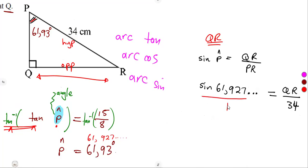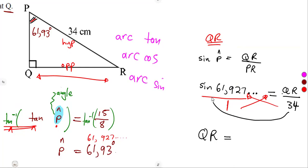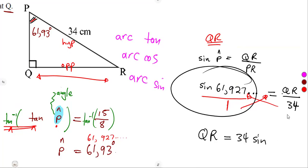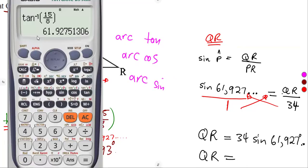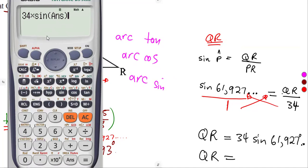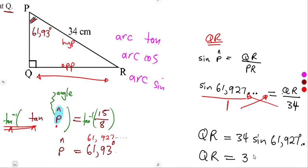From this ratio we can cross multiply. One times QR means QR equals 34 times sin(61.927...). Using the exact angle value, this gives us exactly 30. So our answer is 30 centimeters — the same as what we found before by the first method, this time by solving for the angle first.